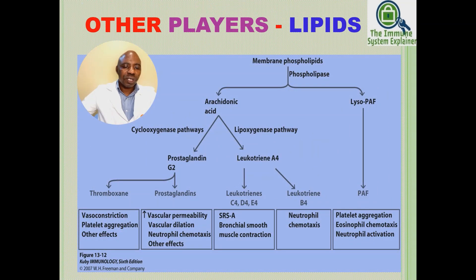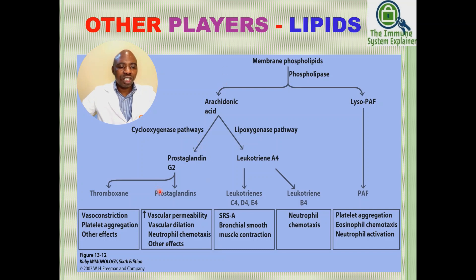In addition to the pharmacologically active players like histamine and the complement components C3a and C5a, there are other lipid-derived players including prostaglandin G2 and leukotrienes, among others. These are involved in many activities including vasoconstriction, platelet aggregation, vascular dilation, neutrophil chemotaxis, and increased vascular permeability.